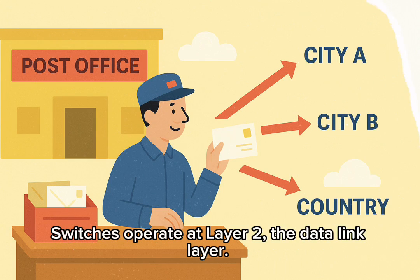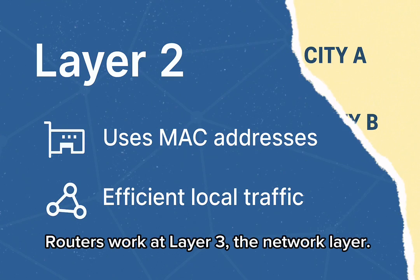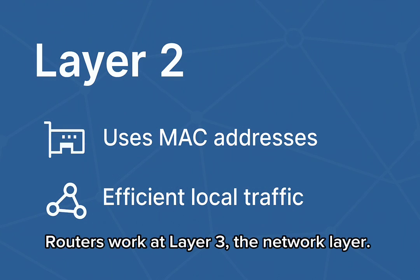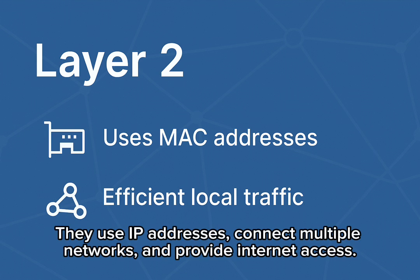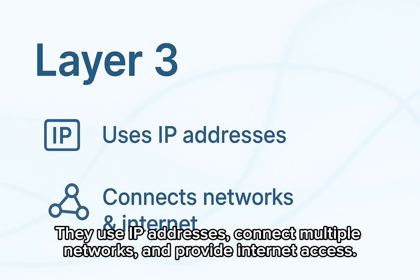Switches operate at Layer 2, the data link layer. They use MAC addresses and make local communication efficient. Routers work at Layer 3, the network layer. They use IP addresses, connect multiple networks, and provide internet access.